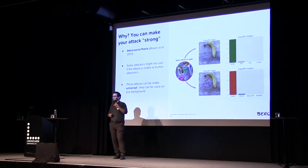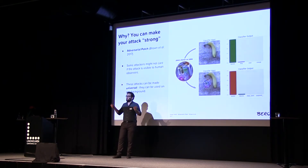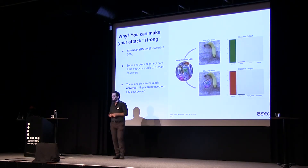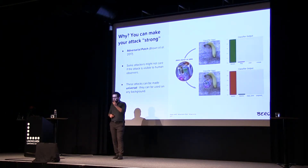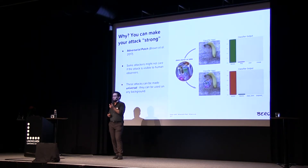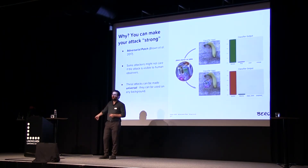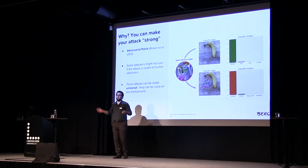If we flip the problem — if you're out there to break these systems, who cares if it's even visible? Why does it have to be invisible? You could just create one of these patches, which some people did recently. This patch we can readily see, but if you really want to cause harm, it's enough to put it up on a stop sign. If you're lucky, you'll fool some autonomous car being tested out there — and then they're never going to find out who you were.